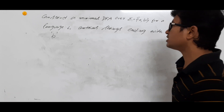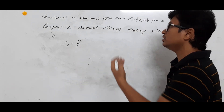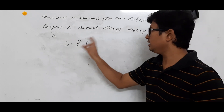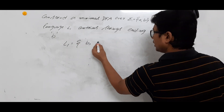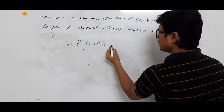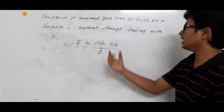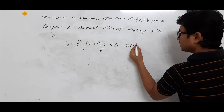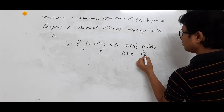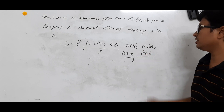First, I need to find what strings belong to language L1. The smallest one is B, because it ends with B itself. Then AB — AB is ending with B. So length 1 is B, length 2 is AB and BB. For length 3: AAB, ABB, BAB, and BBB are all allowed — these are strings of length 3 ending with alphabet B.